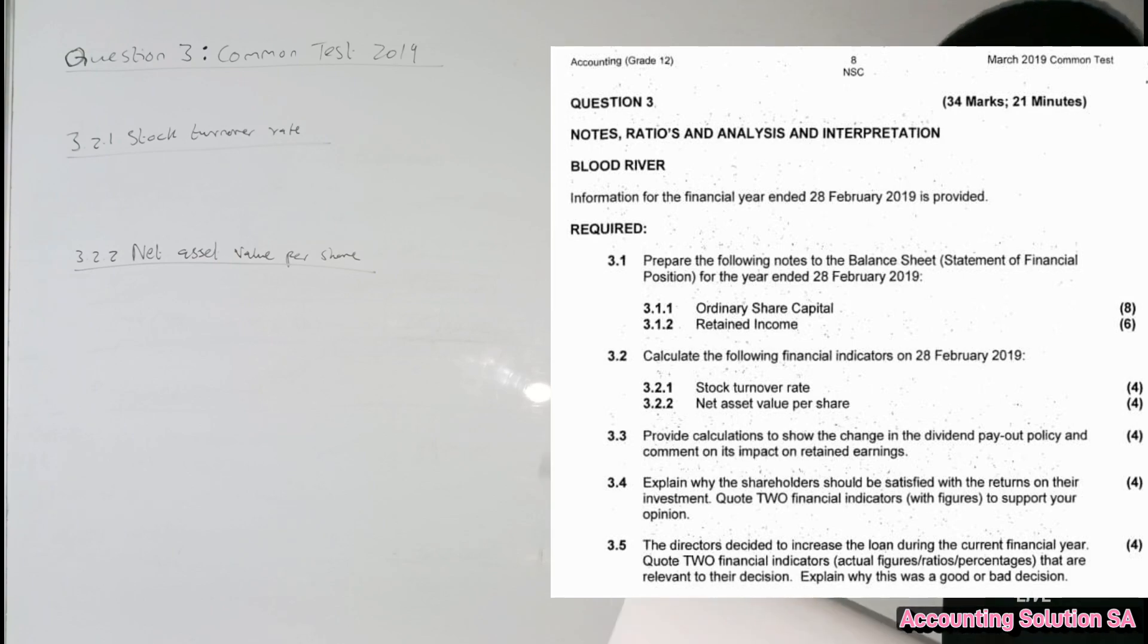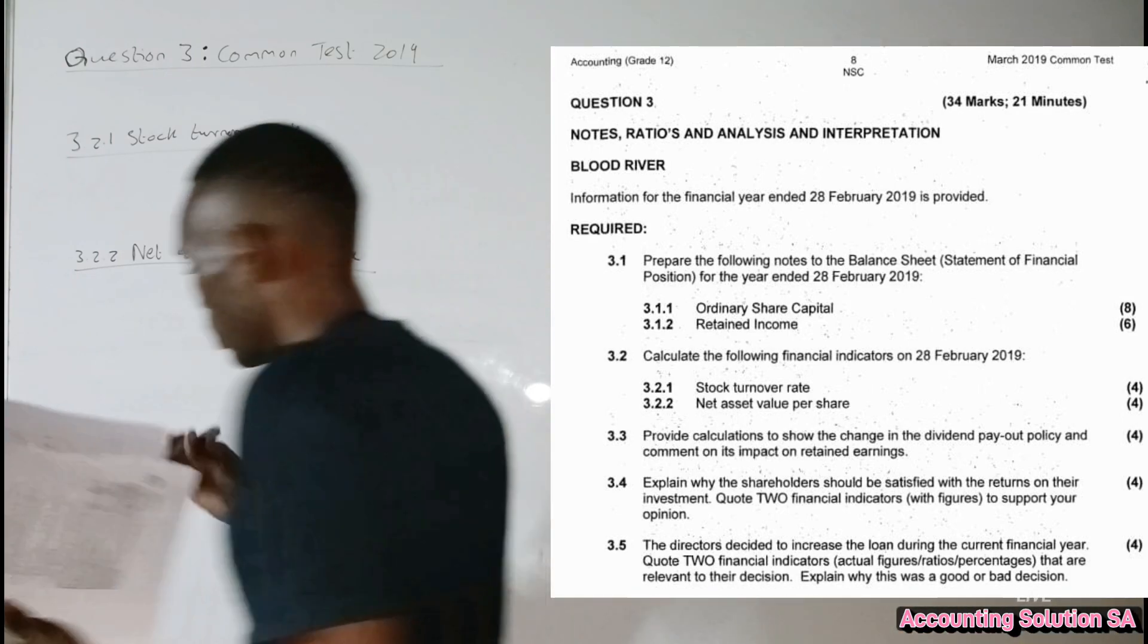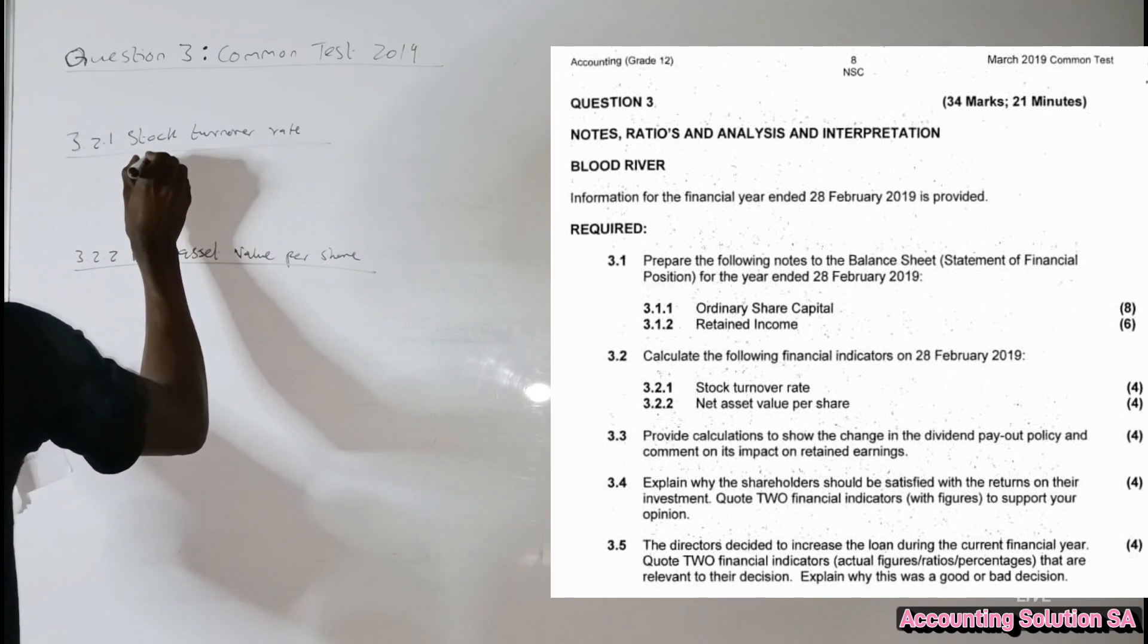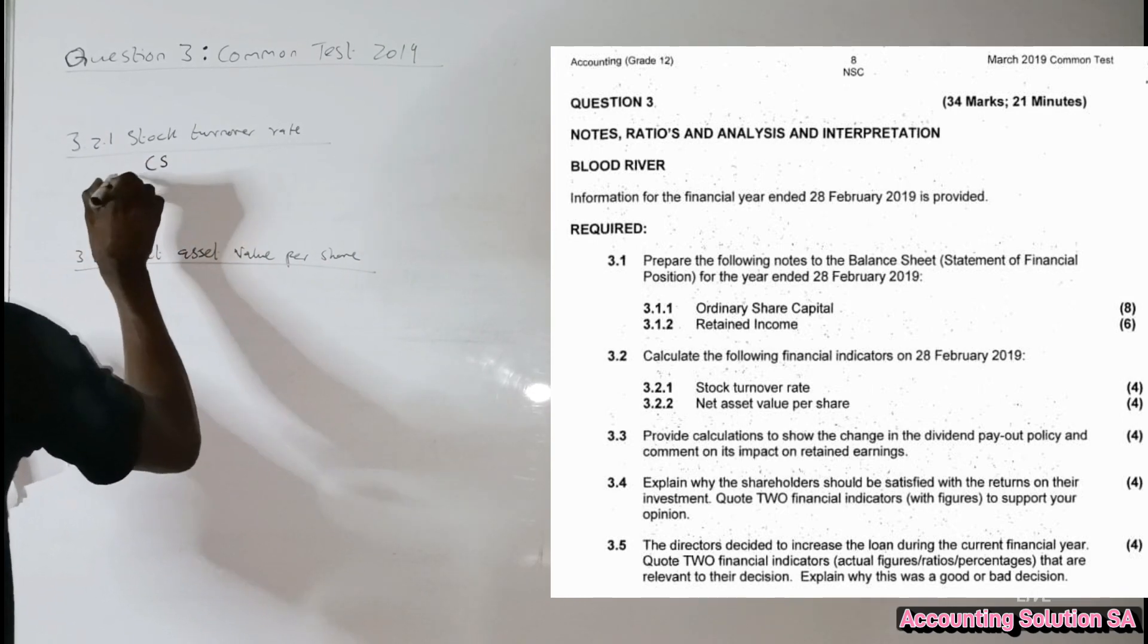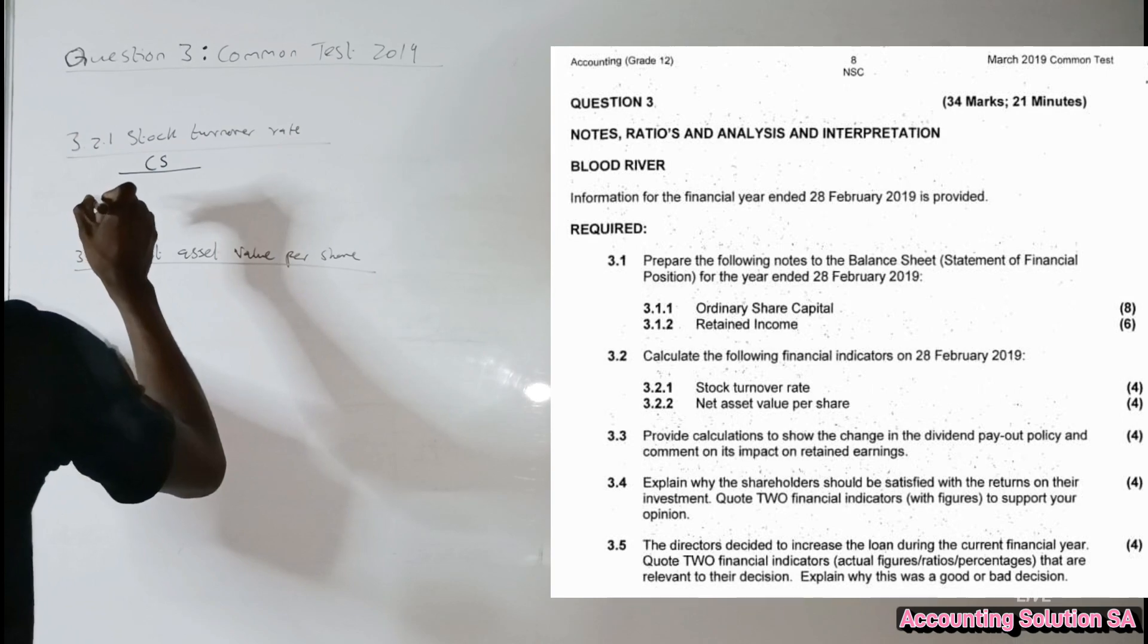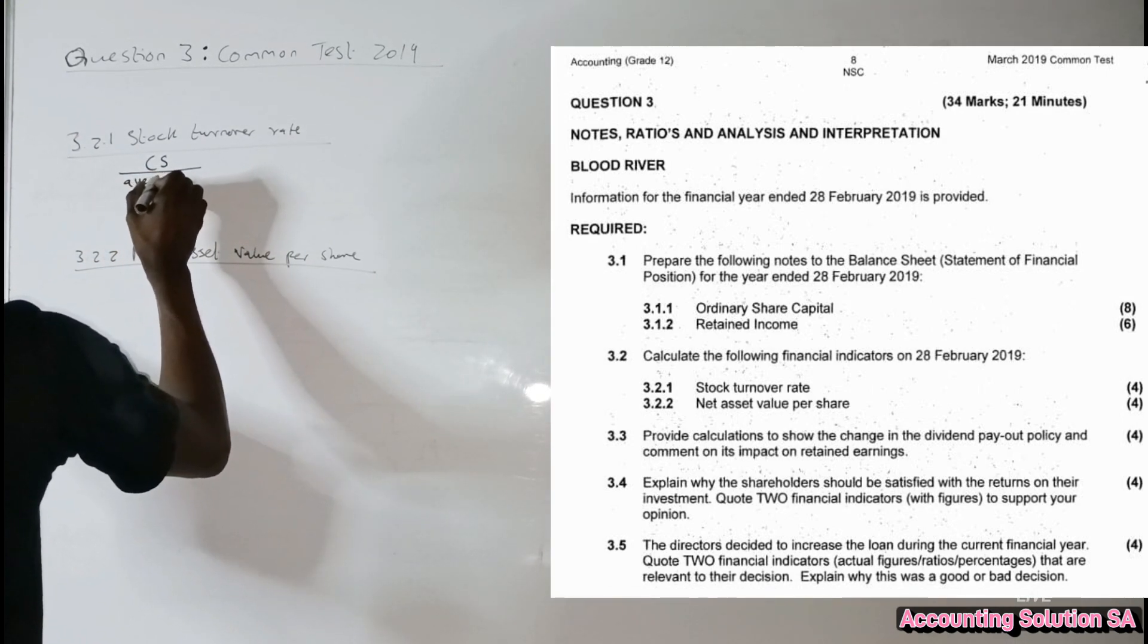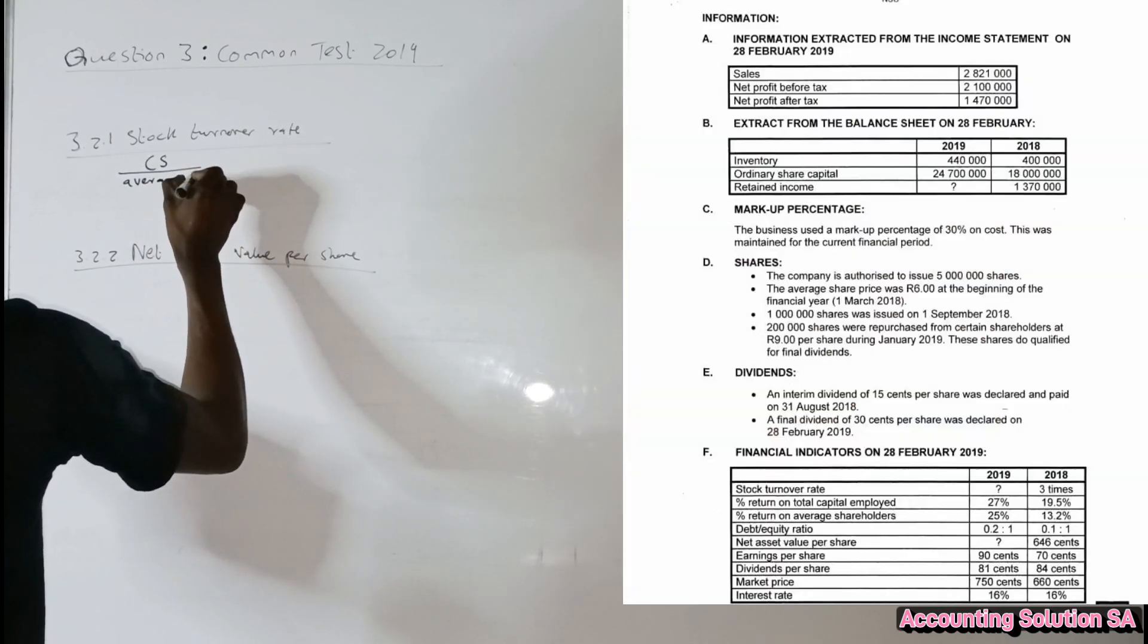The formula that you need to use guys, it says cost of sales - likely you guys, you are now given a formula sheet which means that you're gonna just copy them from your formula sheet - average inventory.